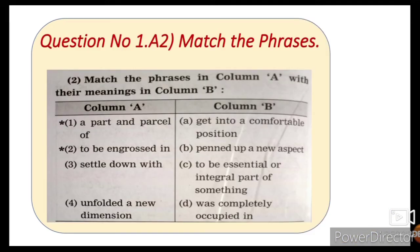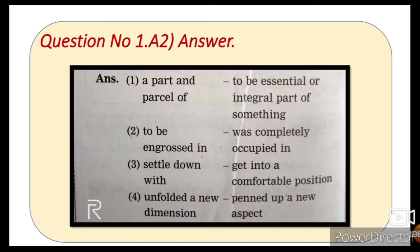Activity A2: Match the phrases in column A with their meanings in column B. The phrases are: 'Part and parcel of,' 'To be engrossed in,' 'Settled down with,' and 'Unfolded a new dimension.' The meanings are: to be essential or integral part of something; was completely occupied in; get into a comfortable position; and pinned up a new aspect.